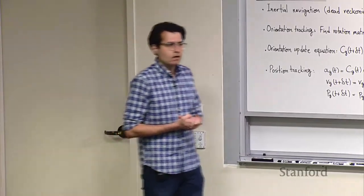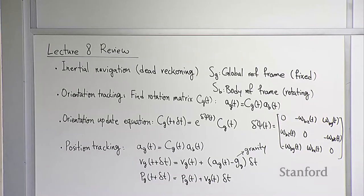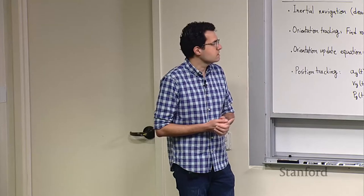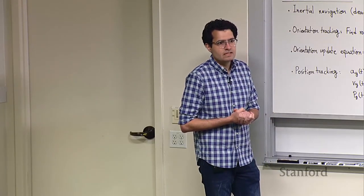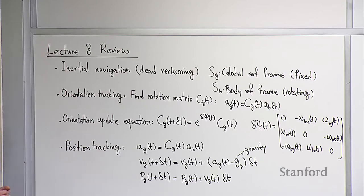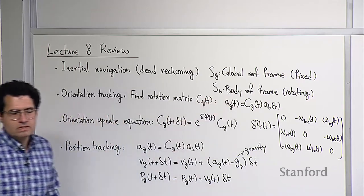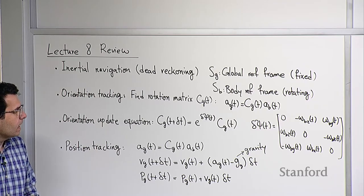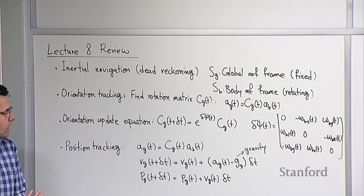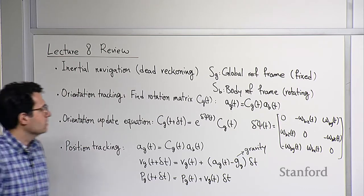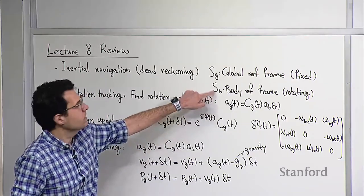Let's start with a quick review of the previous lecture. Last time, we finished the discussion about inertial navigation, or specifically dead reckoning technique. The problem setup is there is always a global reference frame, also called a world frame, which is a fixed coordinate system in which you want to localize yourself. The types of inertial sensors typically used in robotics have their own body reference frame, called S_B. They report measurements in that reference frame, which is strapped down to the robot platform and rotates with the robot.